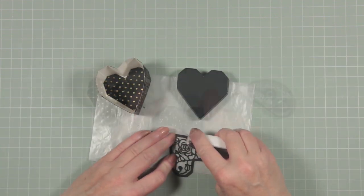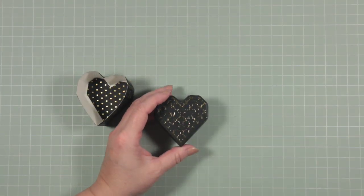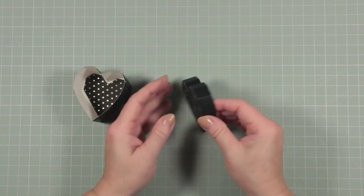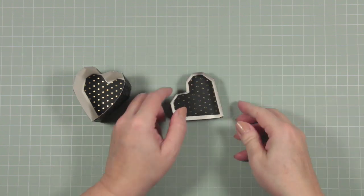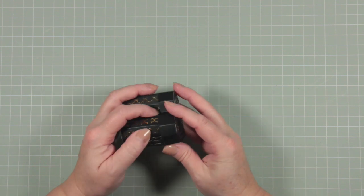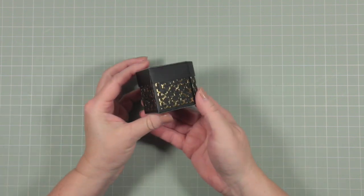Finally, I want to add some glue to the reverse of a heart that I die cut earlier, and I'm going to glue this onto the lid of my box. Now I can assemble the whole thing. It's all finished, and I think that looks beautiful.